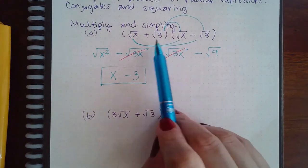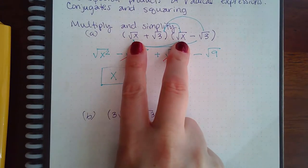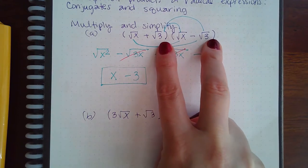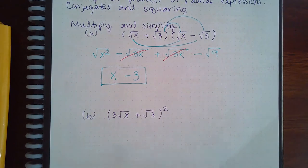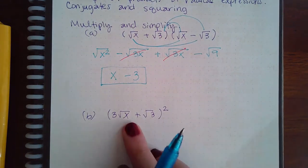These are called conjugates. When the front numbers are the same and the back numbers are the same, the only difference is one has a plus and one has a minus. Those are called conjugates.